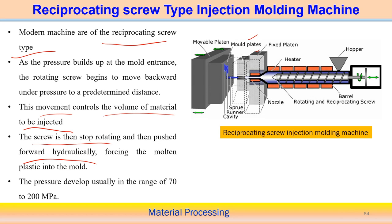In the reciprocating screw machine, once a particular material volume has been created, rotation stops and hydraulic pressure is applied to push the metal into the mold — completing one cycle. The cycle time is more precisely controlled in this type compared to other injection molding machines. The pressure developed is typically around 70 to 200 megapascals.